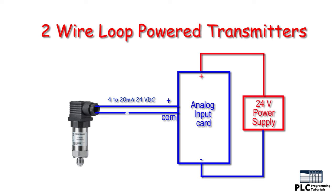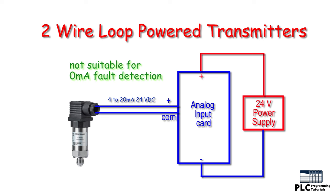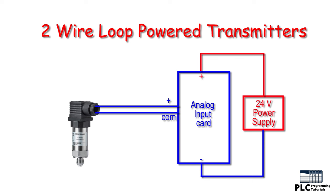This configuration also has some disadvantages. Transmitter discrete fault signaling cannot be set at 0 milliamps, as this configuration continues to draw some current in a fault condition. Therefore, this configuration is not suitable for control panels that require a 0 milliamp signal for fault indication.